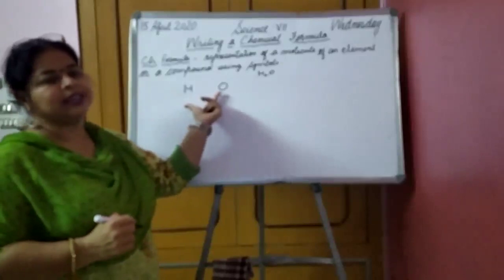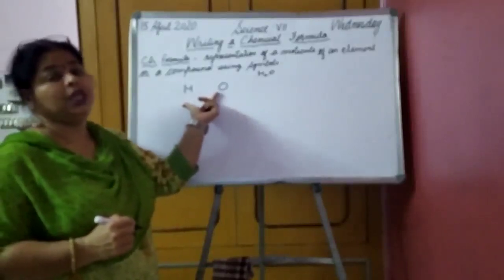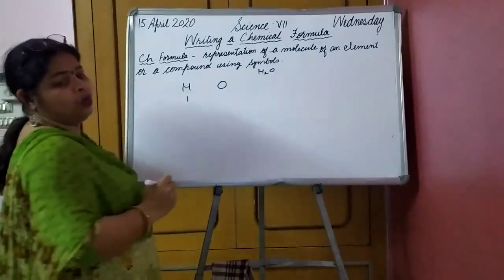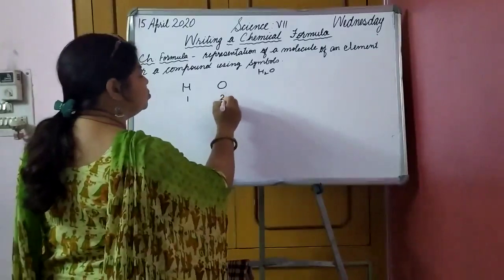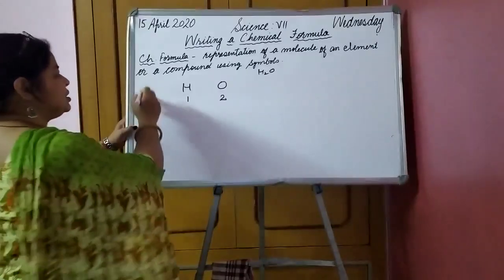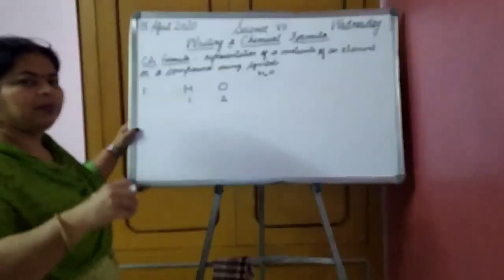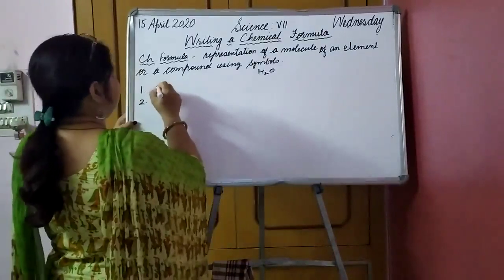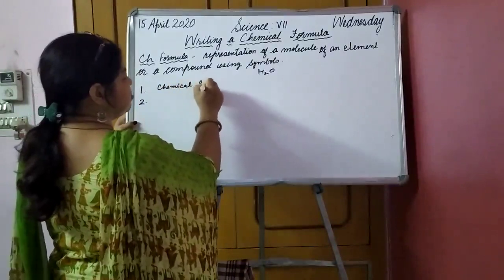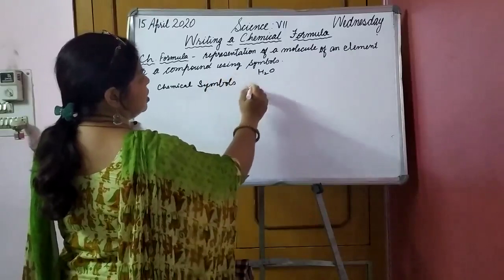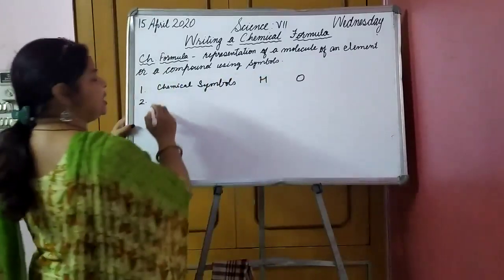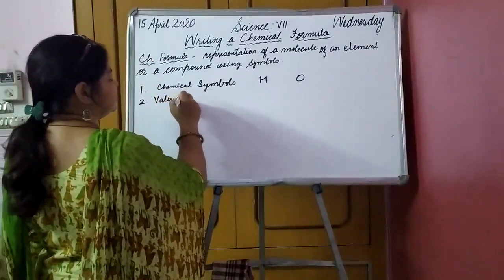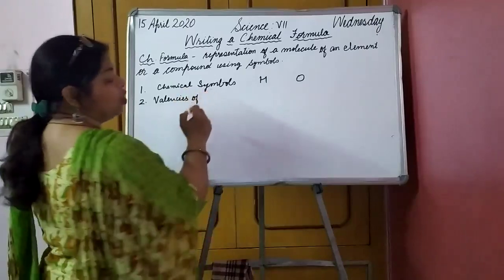We have written the symbols. Now the second step says: write the valency of each element below its chemical symbol. What is the valency of H? It is 1. What is the valency of O? It is 2. So the first step was to write down the chemical symbols of the elements present in the compound. The second step is to write down the valency below them.